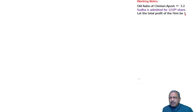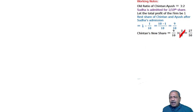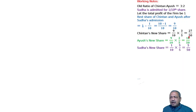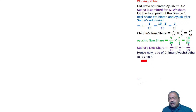Let the total profit of the firm be 1. Once Shudha takes 1/10, the remaining share for Chintan and Ayus is 9/10. Chintan will take 3/5 of 9/10 and Ayus will take 2/5 of 9/10. Shudha's share is 1/10. Making the denominator 50: Shudha's share becomes 5/50. The new ratio becomes 27:18:5.